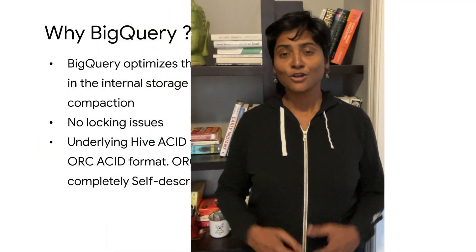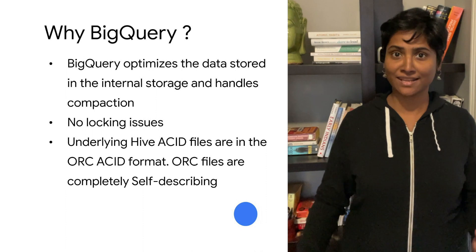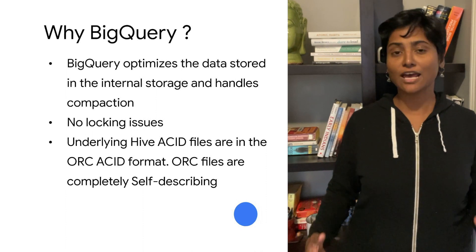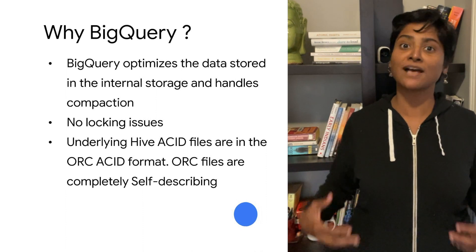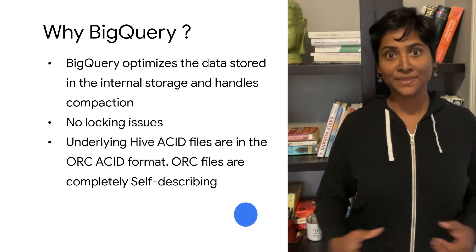Another challenge is that running major compactions on a Hive ACID table is a resource intensive operation. Google BigQuery is a serverless, highly scalable cloud data warehouse that allows for super fast queries on petabyte scale data. You don't have to compact before copying these files to Google Cloud Storage.